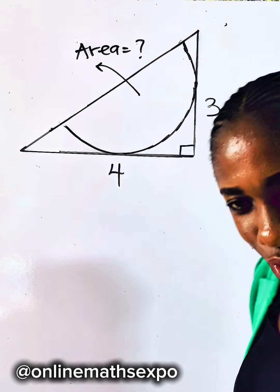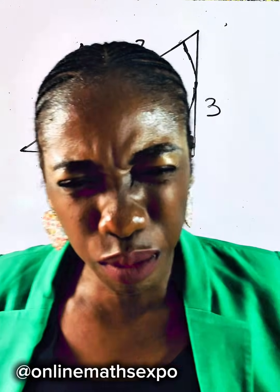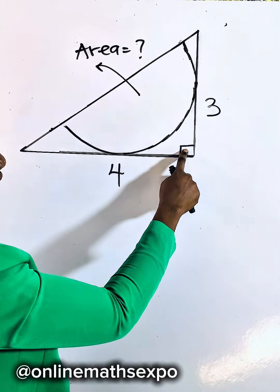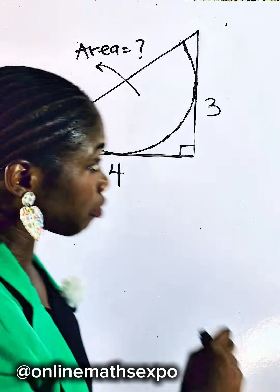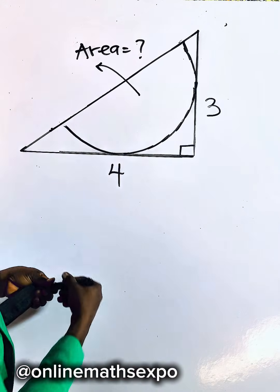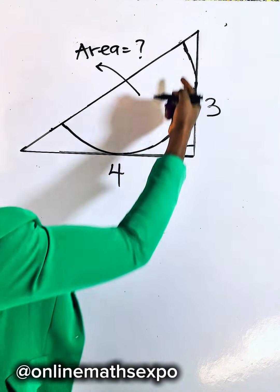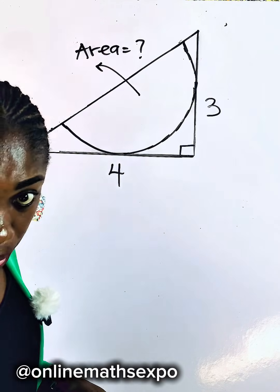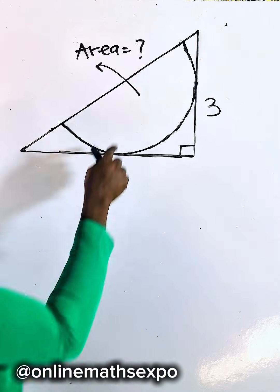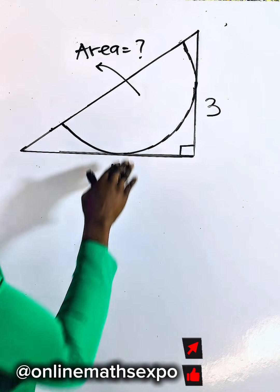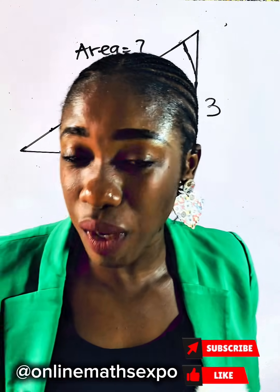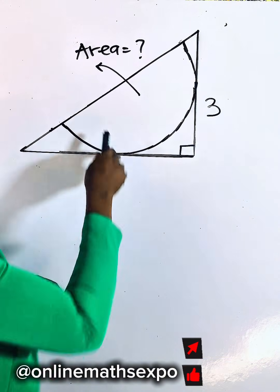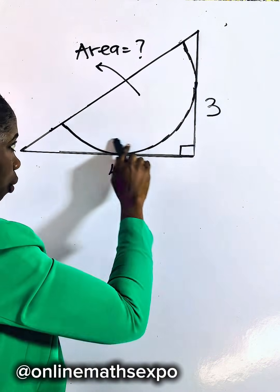We are given a geometry tricky problem to work on. We are given a right triangle, right-angled here, and inside this is inscribed a semicircle. The semicircle is touching the legs of this right triangle. The question is asking us to find the area of the semicircle — the space inside this plane shape, the amount of space it occupies.